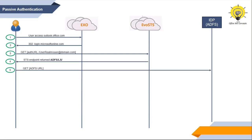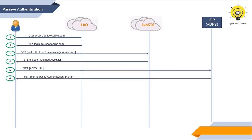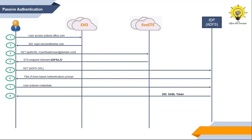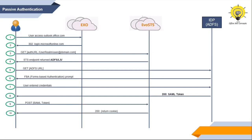The user will contact its STS endpoint, which is the ADFS server of its organization. The ADFS server will present a forms-based authentication prompt to the user, and the user will enter his password. When the user is authenticated, the ADFS server will issue a token to the client. The client will post that token to EvoSTS, and EvoSTS will issue authentication cookies to the user. The user will then get access to OWA.